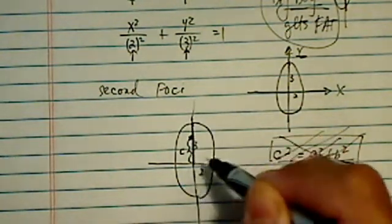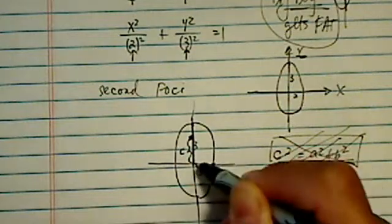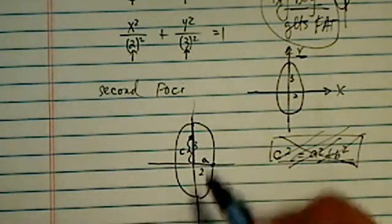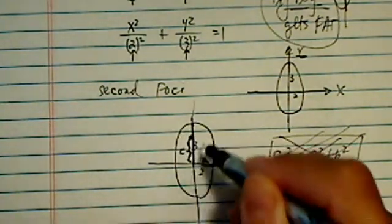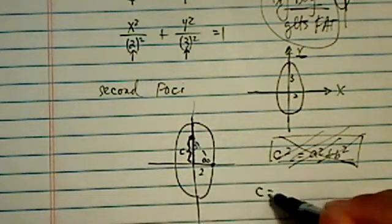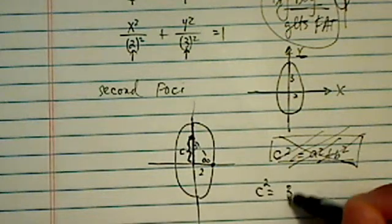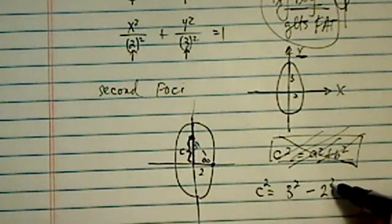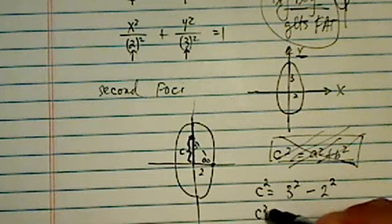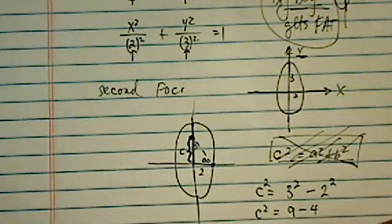In this ellipse here, this side is A, which is 3. You're trying to find a small one here, so C squared equal to large number, which is 3 squared, minus the small number, which is 2 squared. So I have C squared equal to 9 minus 4, which is 5. So C is equal to plus minus radical 5.